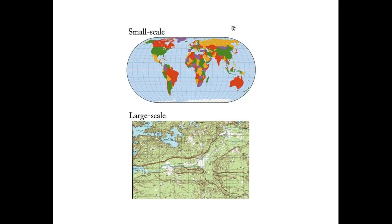Map projections are an odd topic for a lot of reasons. One of those reasons is that it's really kind of two distinct topics: large-scale projections versus small-scale projections. People often reverse the meanings because the terminology sometimes seems counterintuitive, so let me give a refresher. If you're showing a large part of the globe, that's small-scale. If you're showing a small part of the globe, that's large-scale.